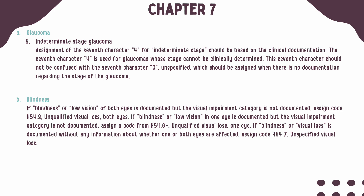If blindness or low vision of both eyes is documented, but the visual impairment category is not documented, you should assign code H54.3.